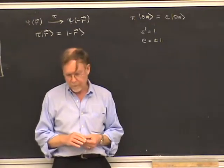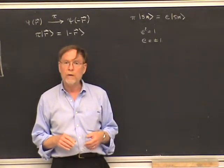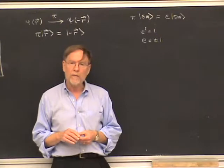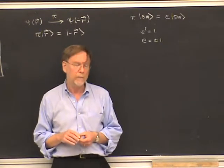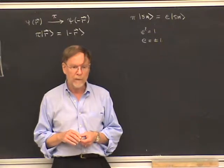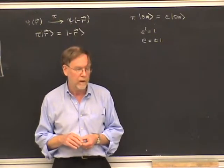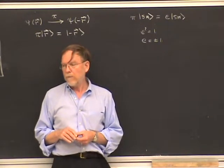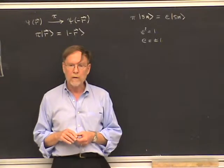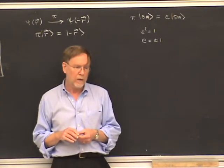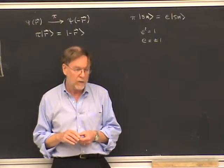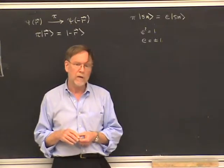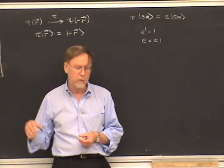In relativistic quantum mechanics, it does make a difference because you can create particles — whether you have particles of odd or even parity matters when particle numbers can change. So in relativistic quantum mechanics, particles have an intrinsic parity that can and is determined experimentally. For now, sticking with non-relativistic theory, we'll just take eta equals plus one, meaning parity acts on spin states and maps them to themselves.